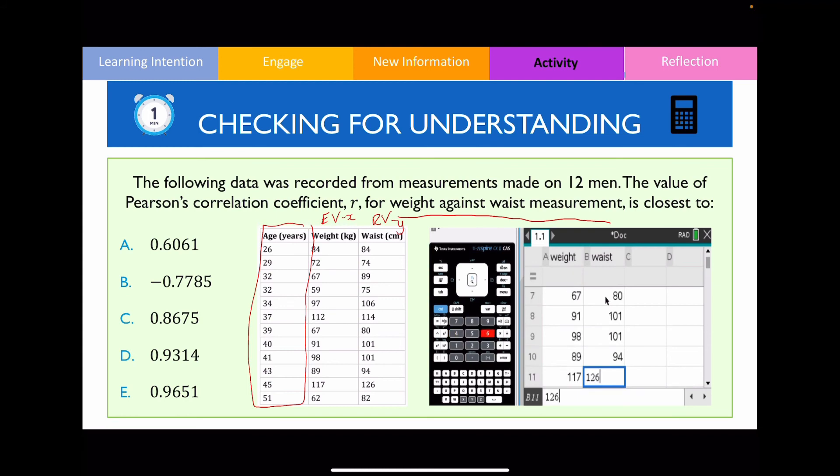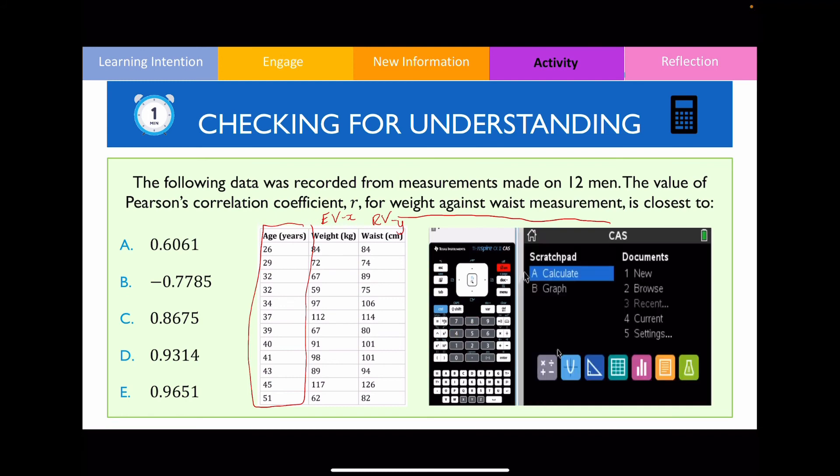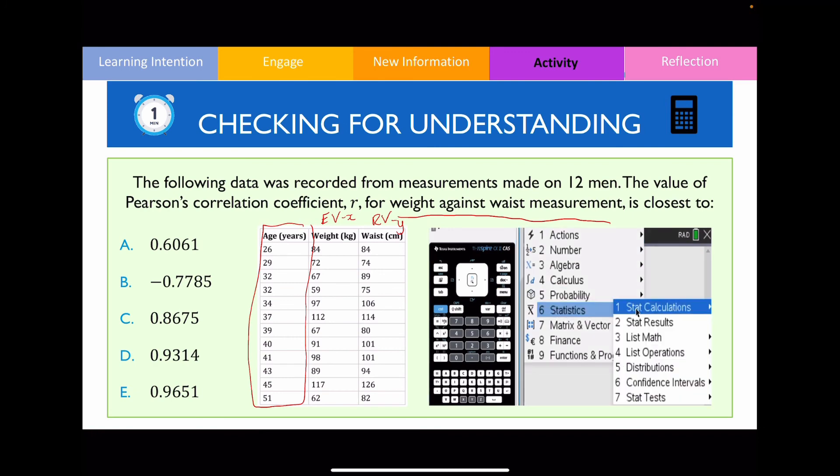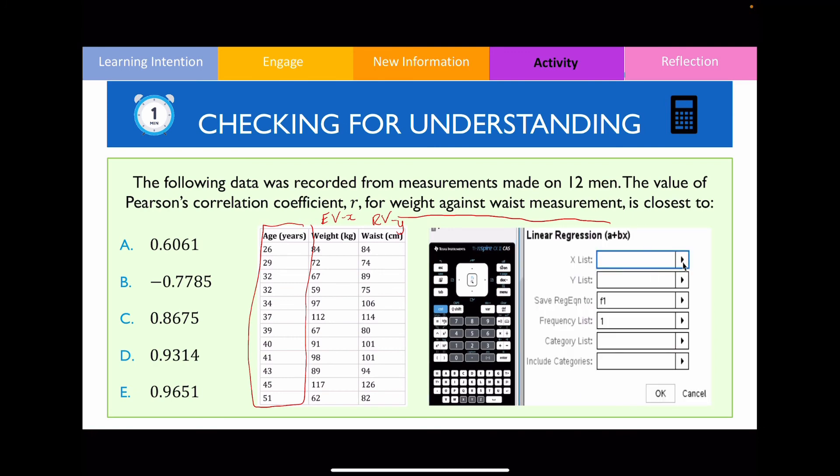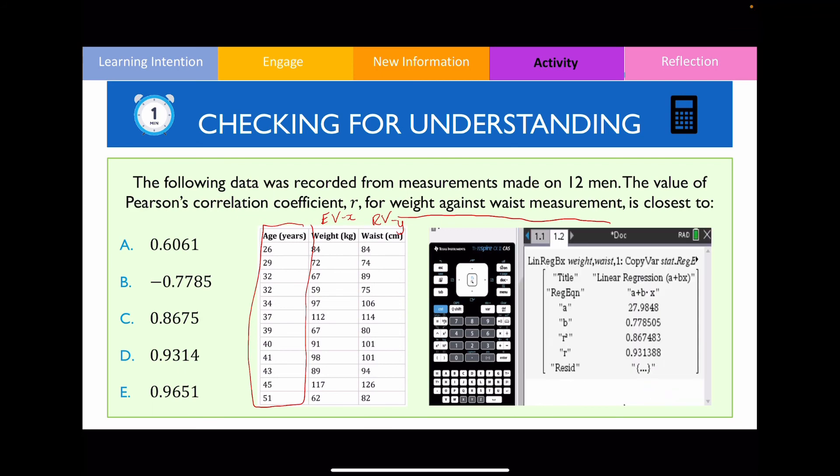So after I've completed entering all the values in my spreadsheet, go main menu, calculator, menu, statistics, and then click on linear regressions. Make sure that your weight is your plot along the x-axis, your waist is plotted along the y-axis, and therefore you're going to get a correlation coefficient that's going to be equal to 0.931388, which is closest to D as the answer.